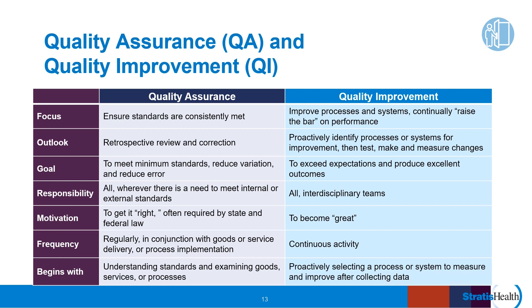QI builds on QA. For example, hospitals are committed to and working on antibiotic stewardship. There are seven core elements of antibiotic stewardship for hospitals: hospital leadership commitment, accountability, pharmacy expertise, action, tracking and reporting, and education.